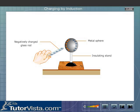The charges cannot escape from the sphere because the supporting stand and the surrounding air are insulators. Thus we see that there is excess of negative charge on the side away from the rod and deficit of electrons on the side nearer to the rod. These charges are called induced charges.